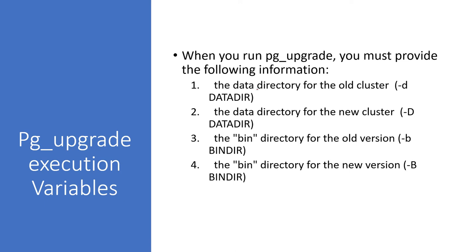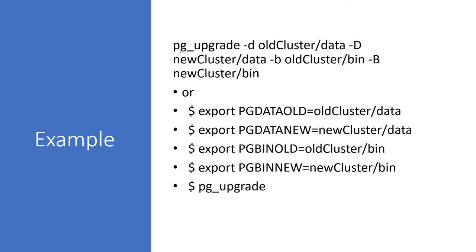What happens in the background when you use this utility: it copies the data from the older data directory to the new data directory. Since there will be two clusters — one on PostgreSQL 10 and another on 12 — you must provide the exact data directory location and binary directory location for both the old and new environments. The syntax is: pg_upgrade -d <old data dir> -D <new data dir> -b <old bin dir> -B <new bin dir>.